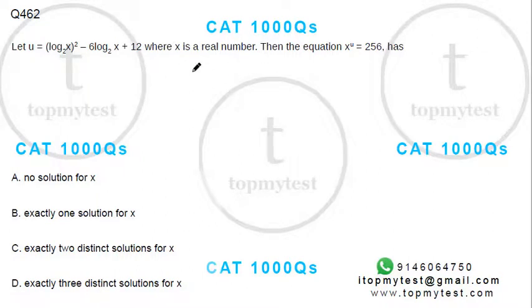Hi, this is a question which came in CAT previously. It's on logarithms and indices. Let u equal (log x to the base 2)² minus 6 times log x to the base 2 plus 12, where x is a real number. Then the equation x^u = 256 has how many solutions?